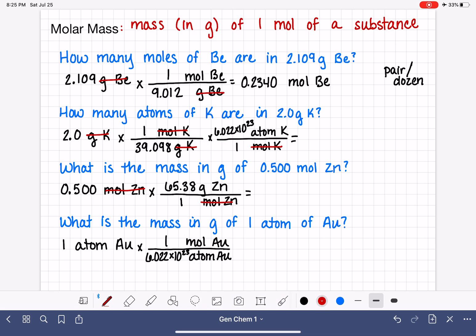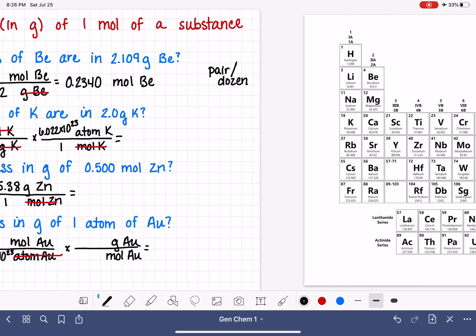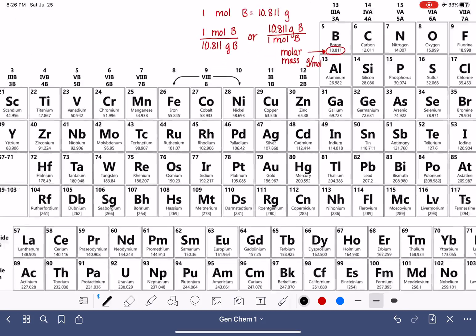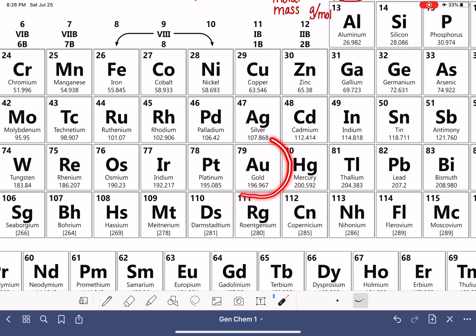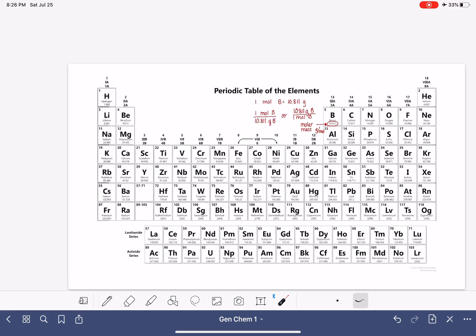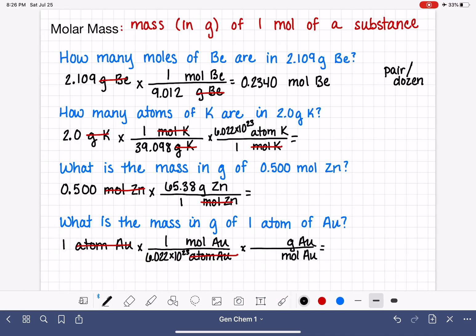So this step, we are going to take care of our units of atoms of gold. Now we need one more step where we can get rid of the units of moles of gold and convert into units of grams of gold. Let's go to the periodic table. We're looking for gold, AU, right here. And its mass is 196.967.